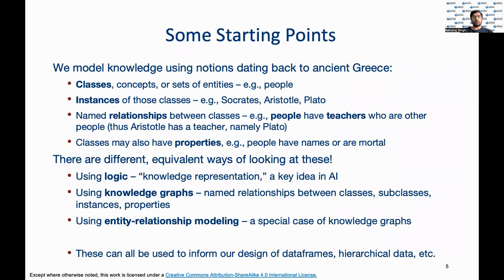Some key notions used for data modeling are listed here. Classes can be seen as sets or collections of entities with similar characteristics. Instances of these classes are those singular entities that represent characteristics from the class. The characteristics that individual entities possess are called properties. For instance, if people is a class and Aristotle is an entity of this class, a property they might possess could be name or that they are mortal. Two classes can be connected by a concept called relationships. For instance, the class people could be related to the class teachers, since teachers are also people.